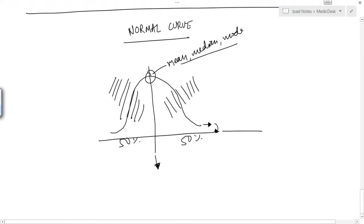And maximum number of observations are concentrated at the center. And so we have a bell shape distribution curve.